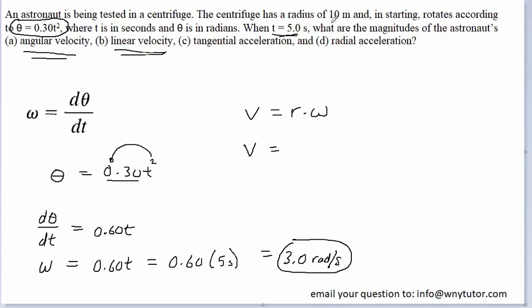Now, the question notes that the radius is 10 meters, so we can plug in 10 meters for that radius. And then, of course, we just obtained omega, the angular velocity. That was 3 radians per second. And when you multiply these values, you're going to get a linear velocity magnitude of 30 meters per second. So this would be the correct answer to part B.